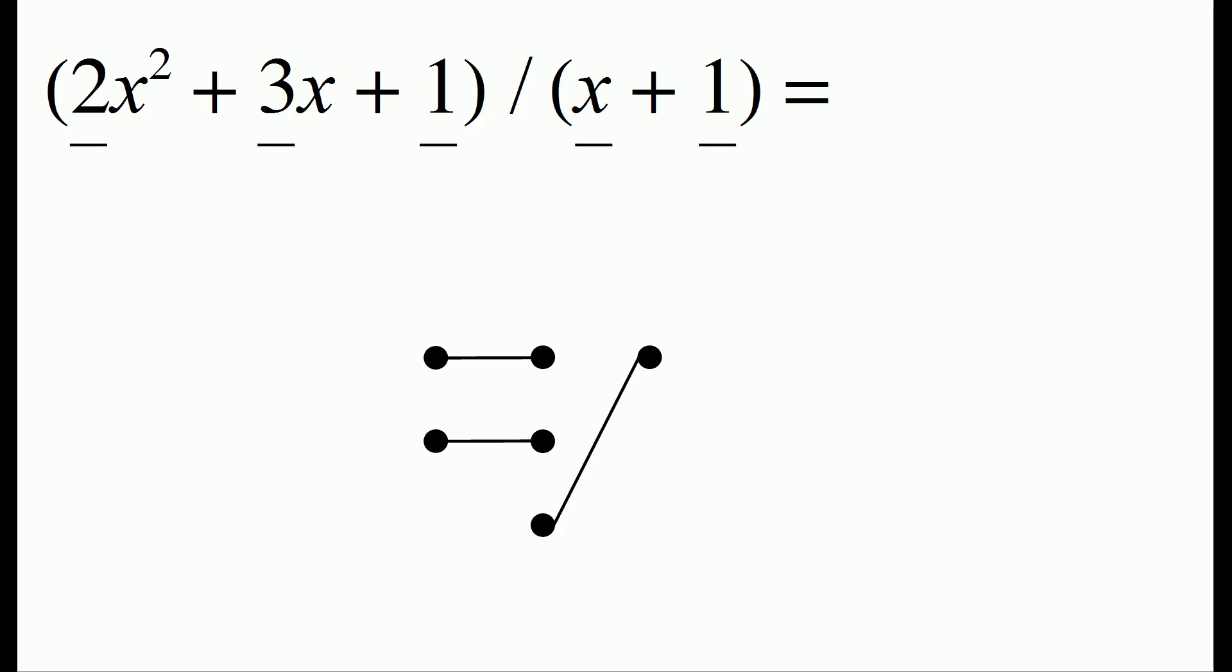Now we can get to our answer by counting the number of figures that starts in each column. For the column on the far left, there are two figures that start in that column. Moving one spot over, there's one figure that starts in that column.